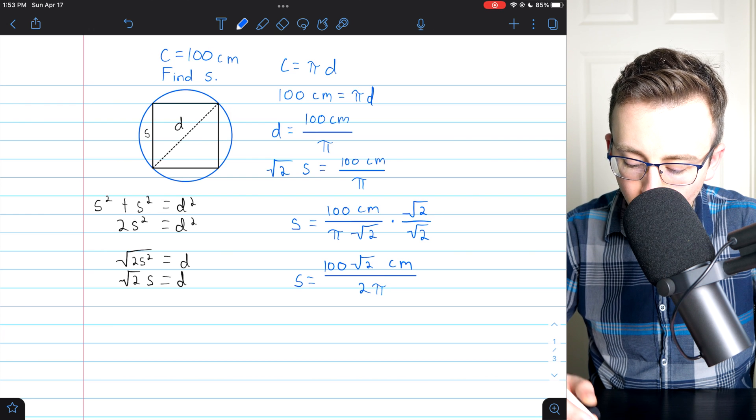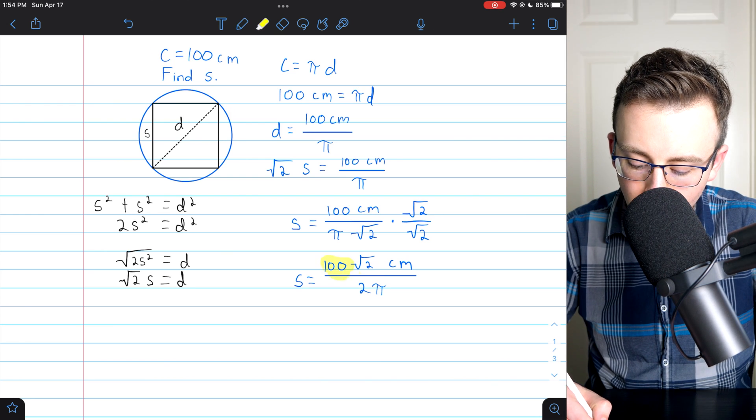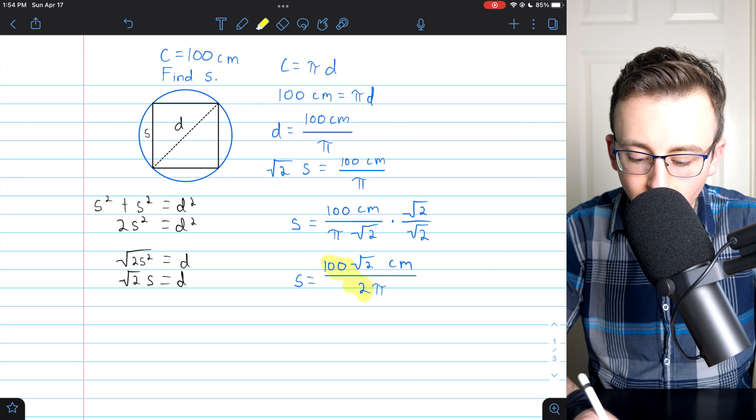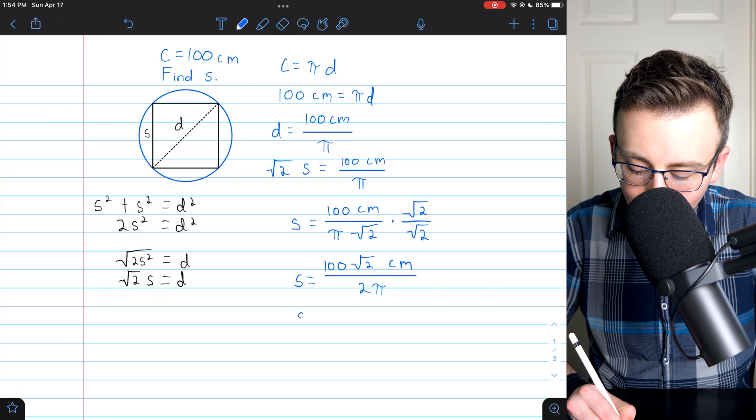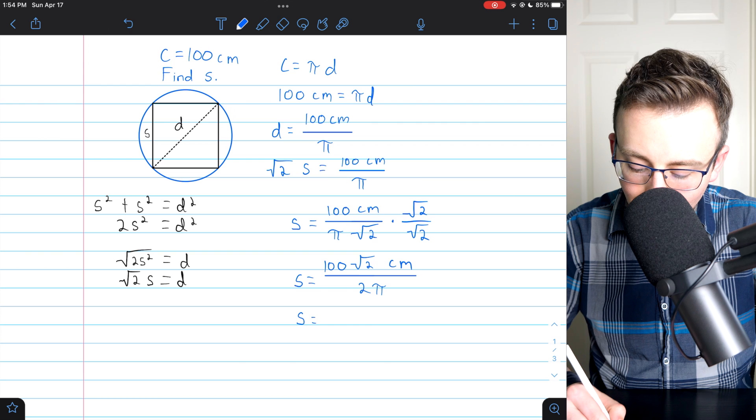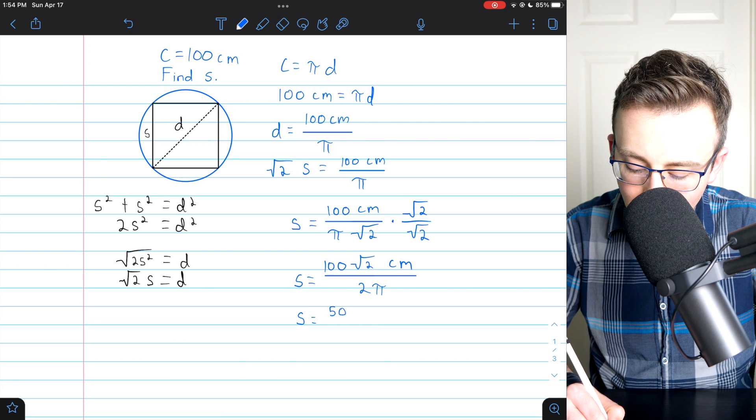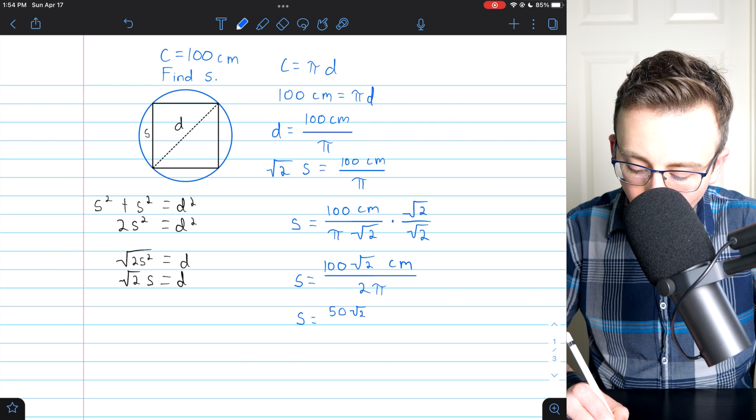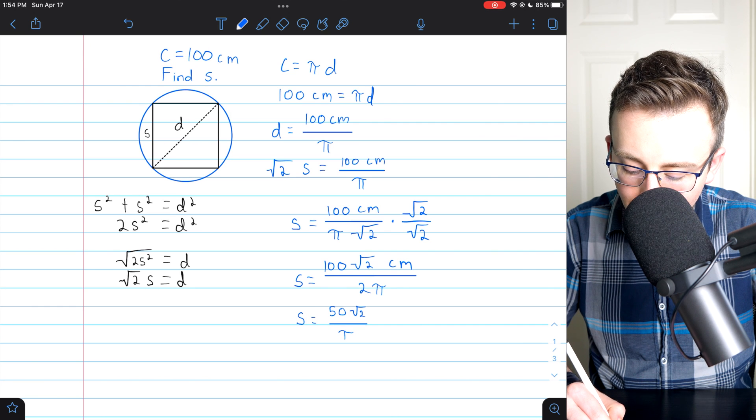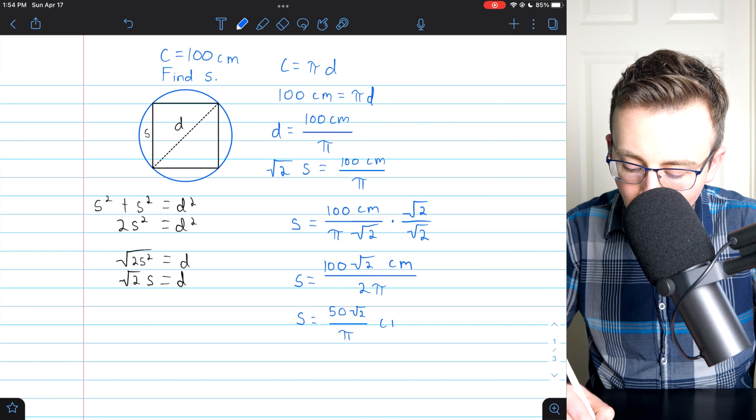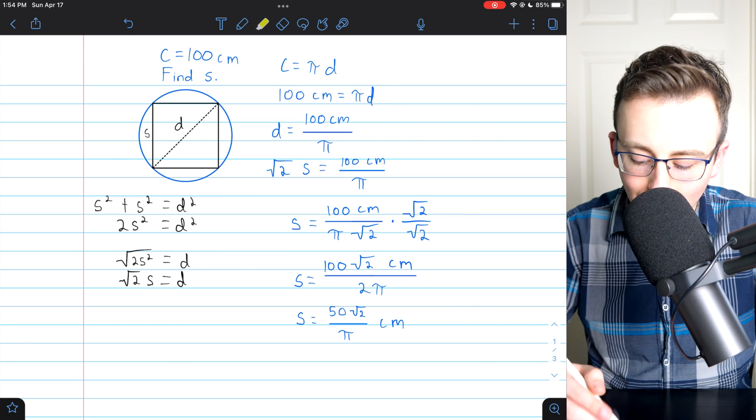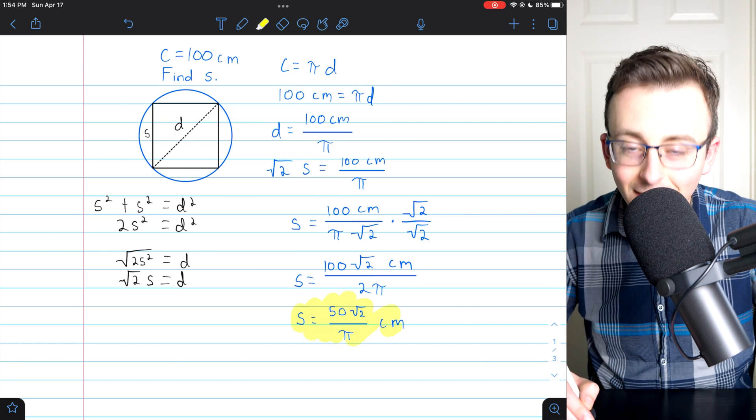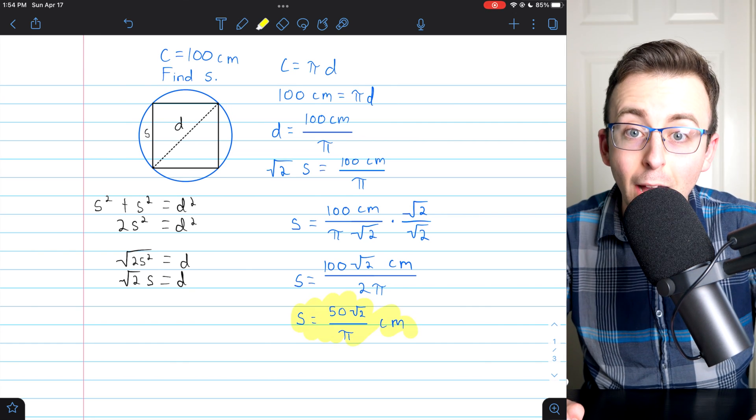But then we can reduce this a little bit, because 100 divided by 2 is 50. So then our final answer is s equals 50 root 2 over pi. 50 root 2 over pi centimeters. That's the side length of the inscribed square.